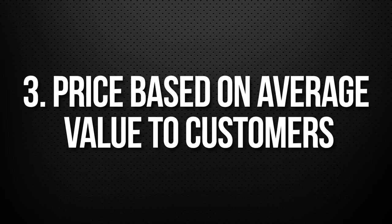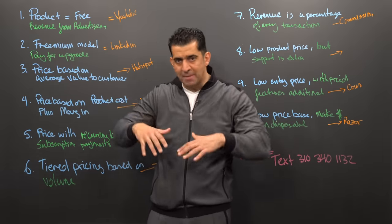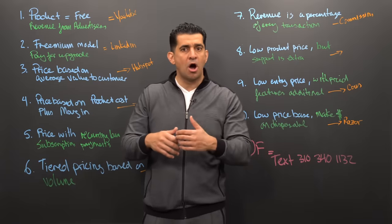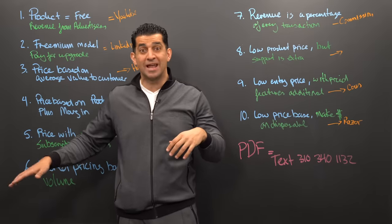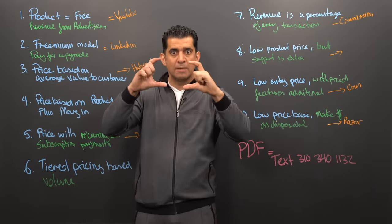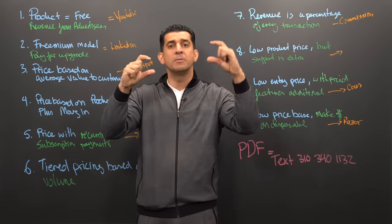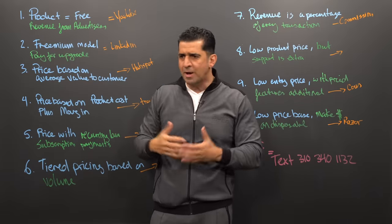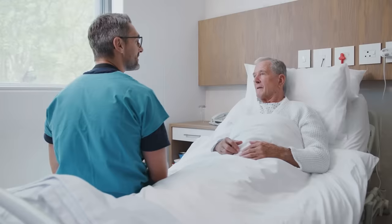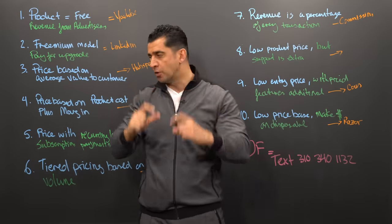Business model number three is pricing based on average value to the customer. So you've got five different customers — it may be health insurance, it may be auto insurance. Somebody may be a great driver with no issues, somebody may be a terrible driver with a lot of issues. They average that out and come up with a price point that's average to the customer. Some may be paying a little bit higher, some a little bit less. With health insurance, younger healthy people are essentially paying for those who are not healthy — it's the average cost for the product they're selling.